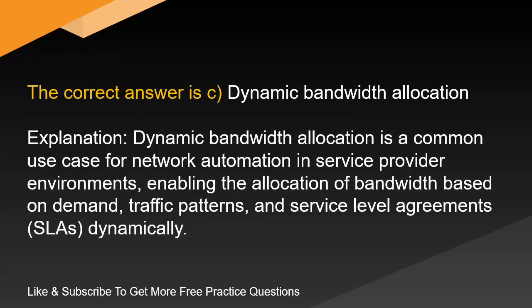The correct answer is C. Dynamic bandwidth allocation. Explanation: Dynamic bandwidth allocation is a common use case for network automation in service provider environments, enabling the allocation of bandwidth based on demand, traffic patterns, and service level agreements dynamically.